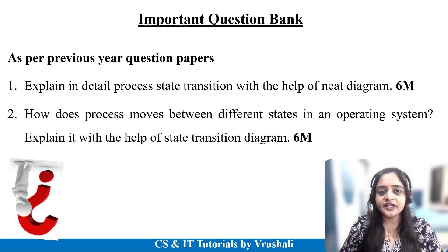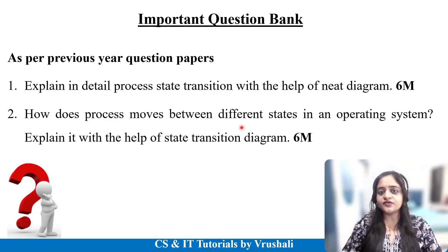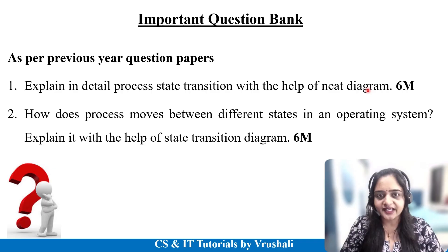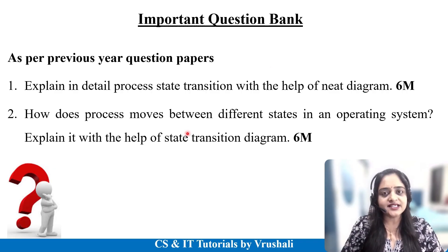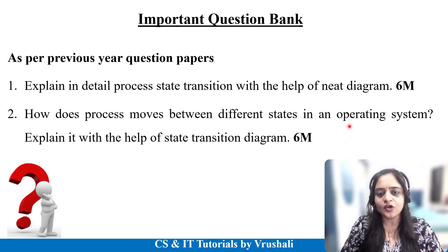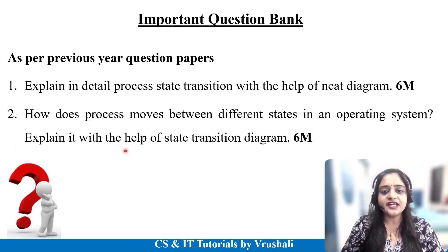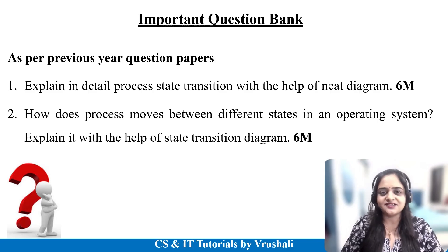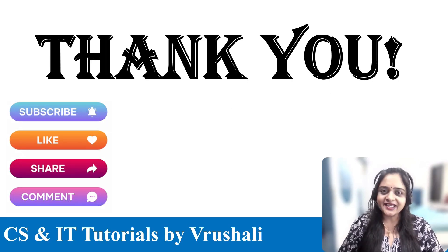As per your previous year question papers, this is one of the most important topics. They ask: explain in detail the process state transition with the help of a diagram. They also ask the same question differently: how does a process move between different states in an operating system — explain with the help of state transition diagrams. For both questions, write the same answer: draw the state transition diagram and explain each state using examples, for six marks.